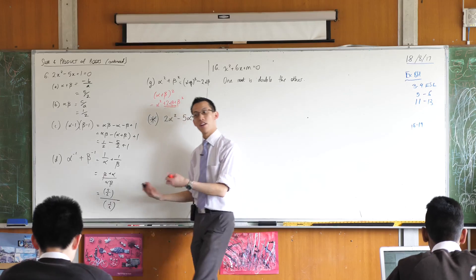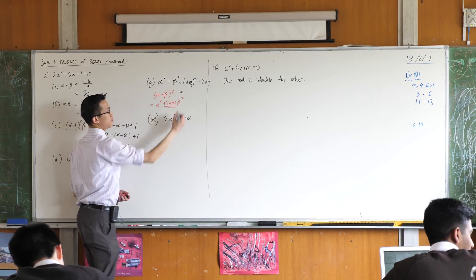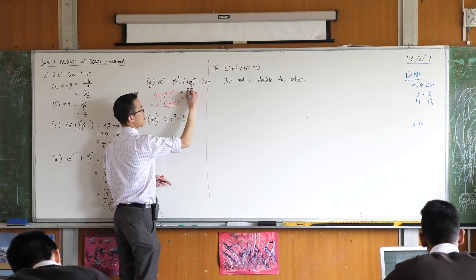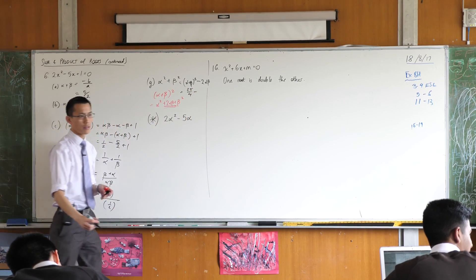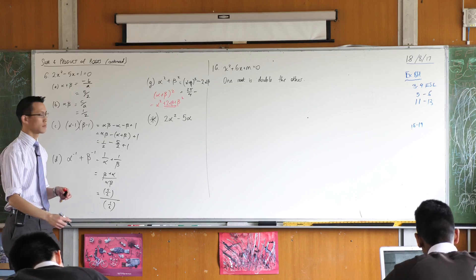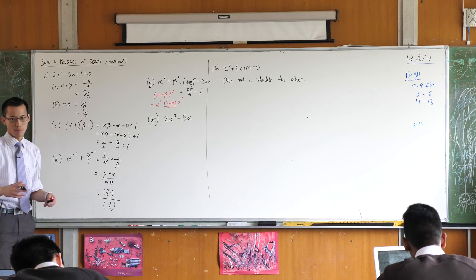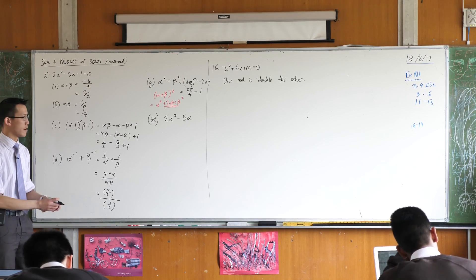I can simply substitute in. What did I just say? 5 on 2 all squared. Take away what? Just 1. So that's going to be 21 on 4. Okay? Again the number is not the important part. The manipulation and the rearrangement are.